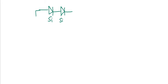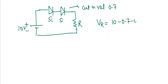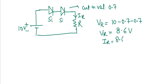Next example: two silicon diodes with the same properties including reverse saturation current. Applied voltage is 10 volts with one resistance R, and the cut-in voltage is 0.7 volts for both diodes. The voltage drop across R is 10 − 0.7 − 0.7 = 8.6 volts, and the current through R is IR = 8.6 / R amperes.